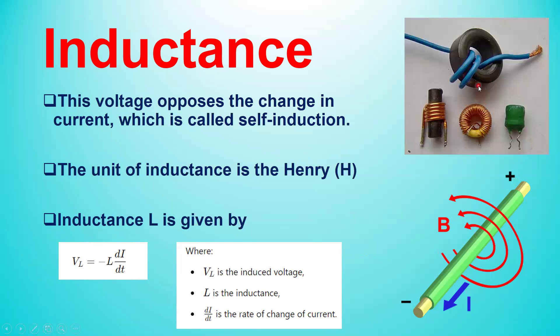The unit of inductance is the henry. Remember, the unit of inductance — not an inductor. An inductor is a physical device and inductance is a property of that component. The unit of inductance is henry, expressed in short by the capital letter H. If you want to calculate the inductance of a coil, there is a formula: you know the voltage that has been induced across the two terminals of the coil.